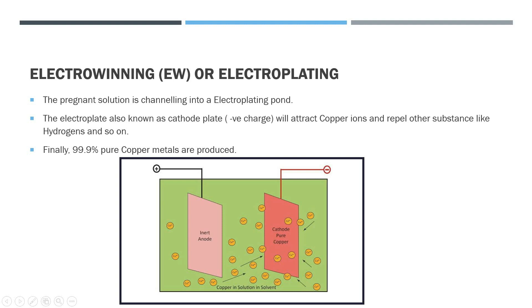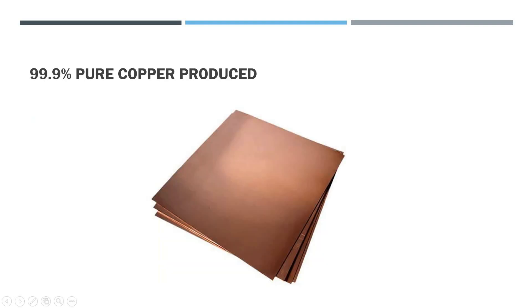For this part, the pregnant solution will be channeled into an electroplating pond, also known as cathode plate, which is having negatively charged ions that will attract copper ions and repel other substances like hydrogen and so on. Ta-da! This is our product that we want, 99% pure copper.